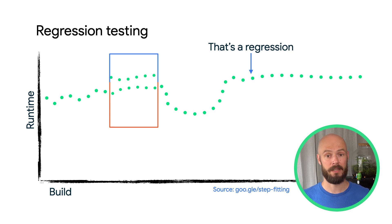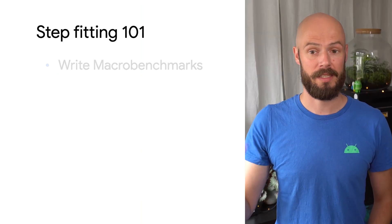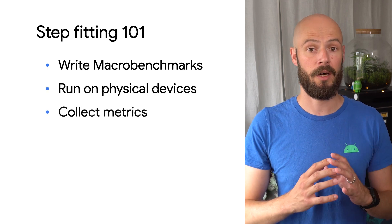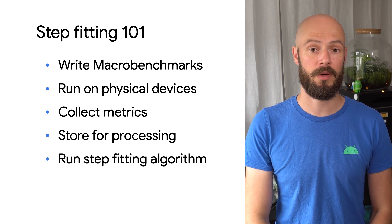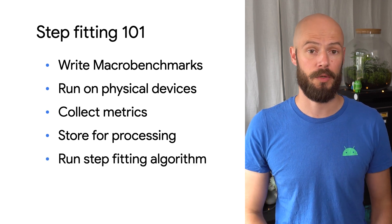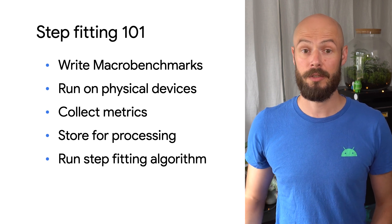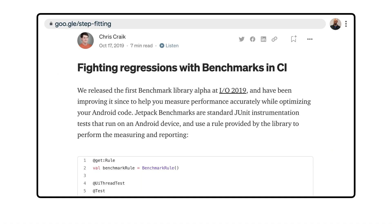In his article on fighting regressions with benchmarks, Chris Craig describes exactly how that algorithm works in our code base and how you can integrate it into your continuous integration pipeline. The short version is: write some macro benchmark tests, then run them on real devices, collect the output metrics and store them for processing. Run the stepfitting algorithm over the amount of builds that works for you. When a regression occurs, notify your release guardian and the person that introduced the regressive change. You can read all the details about stepfitting at the linked resource.